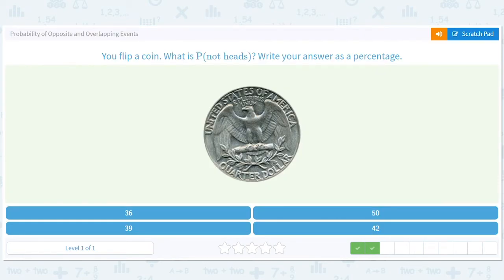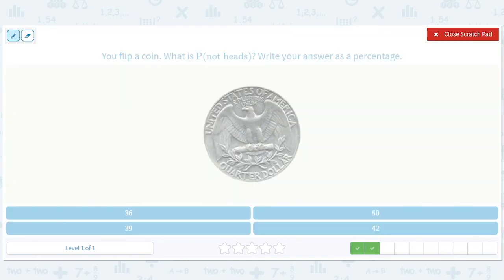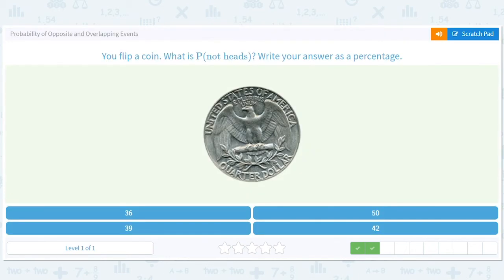You flip a coin. What is the probability of not heads? So heads is 50%. Not heads is 100 minus 50%, right? So it's 50%. Or you could, yeah, I mean, again, heads and tails, it's too simple to even think too much about, right? So 50%.